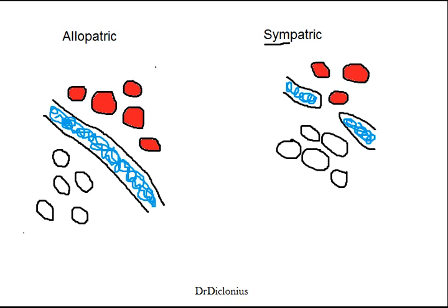But that's the major difference you want to see here between allopatric and sympatric speciation: the geographical barrier.